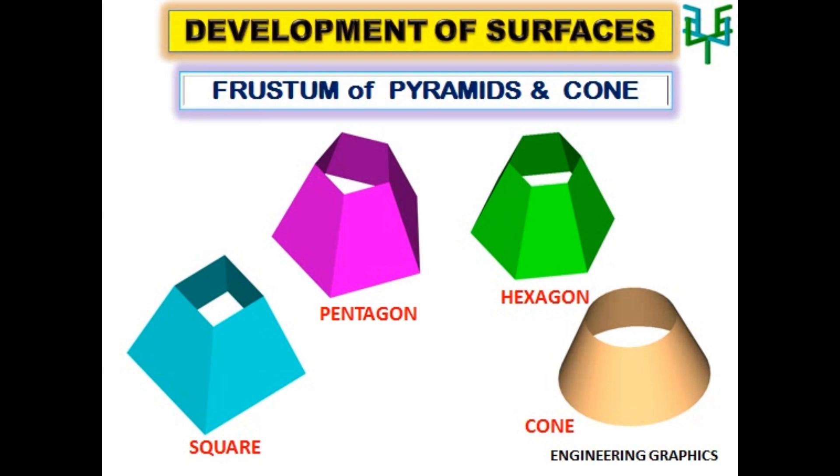This video explains the development of frustum of pyramids and cone. When a pyramid or cone is cut by a plane parallel to its base or perpendicular to its axis, the bottom part of the object is called frustum.